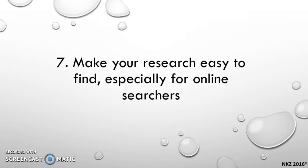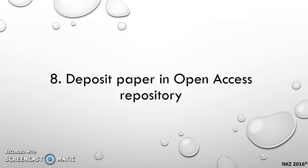Number seven: research shows that there is a correlation between highly cited articles and the likelihood of them being available online. Number eight: we can deposit our papers in an open access repository, and normally universities have their own repository.